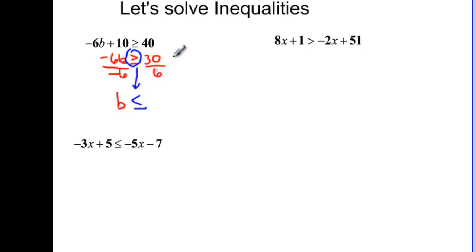So this is b and that was a negative 6 that it was being divided by so that would give me negative 5. So b has to be less than or equal to negative 5 and let's try negative 6. Negative 6 times negative 6 would be 36 plus 10 would be 46 and 46 is greater than 40 so it works.